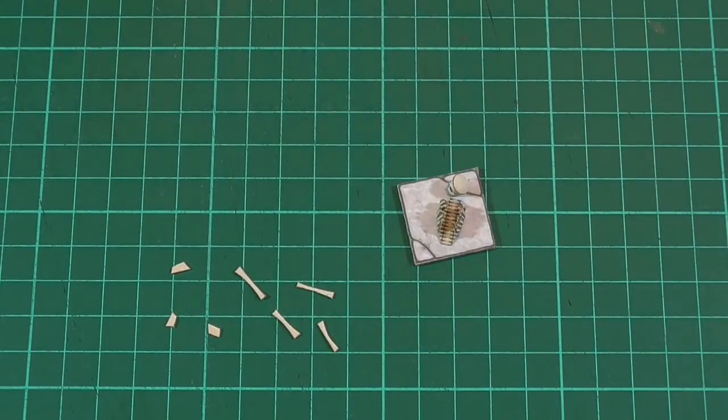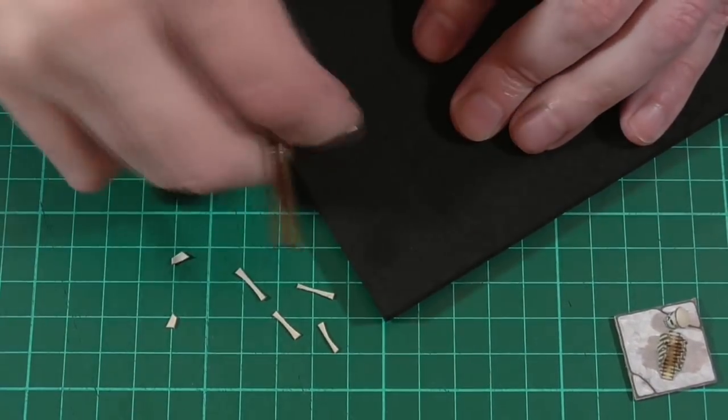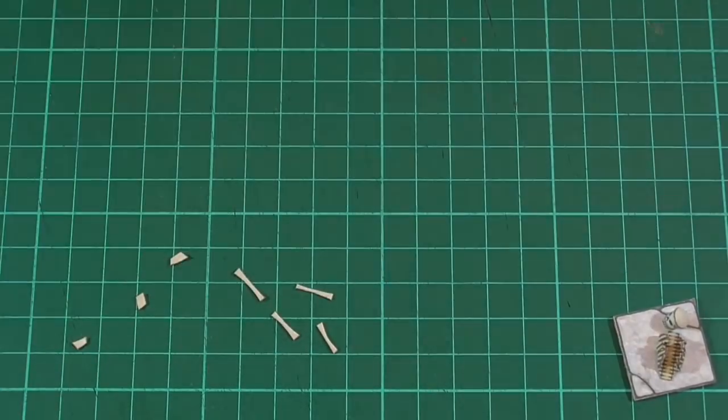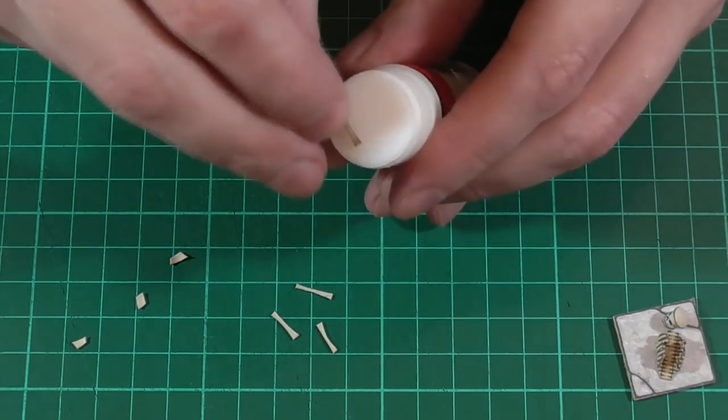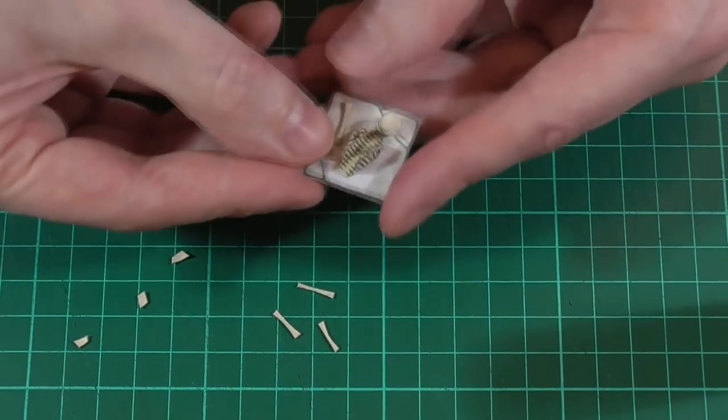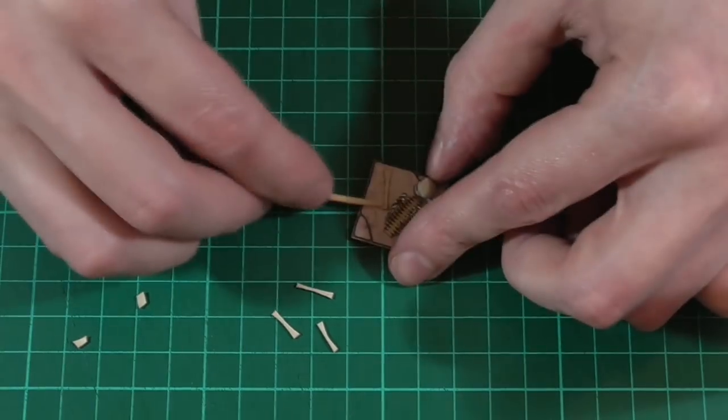But before we start gluing all of the bones in place, I'll use the end of the paint brush again just to give the small fragments a slight curve, basically to make them look a bit more three-dimensional. Then we can take each of the bones, apply some glue to the back just by rubbing them off of the glue stick, and then stick them down in place.